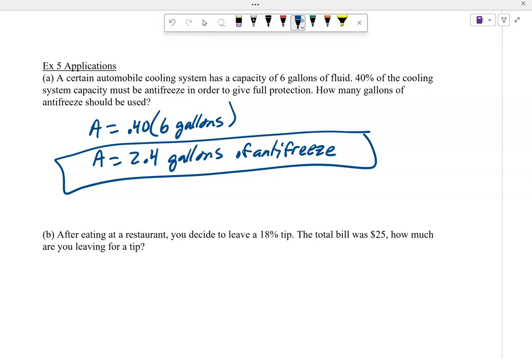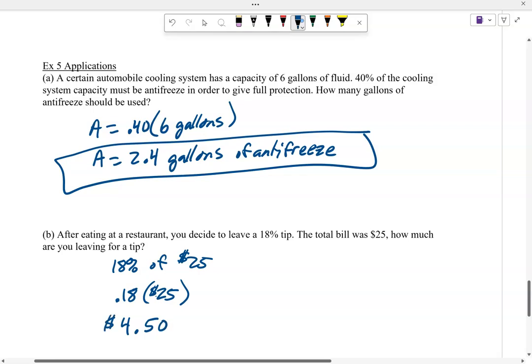After eating in a restaurant, you decide to leave an 18% tip. The total bill is $25. How much are you leaving for a tip? We're wanting 18% of 25 bucks. 18% as a decimal, multiply $25. I punch in 0.18 times 25, and I get $4.50. That's a little bit on percents to get you going. Appreciate you watching. See you next time.